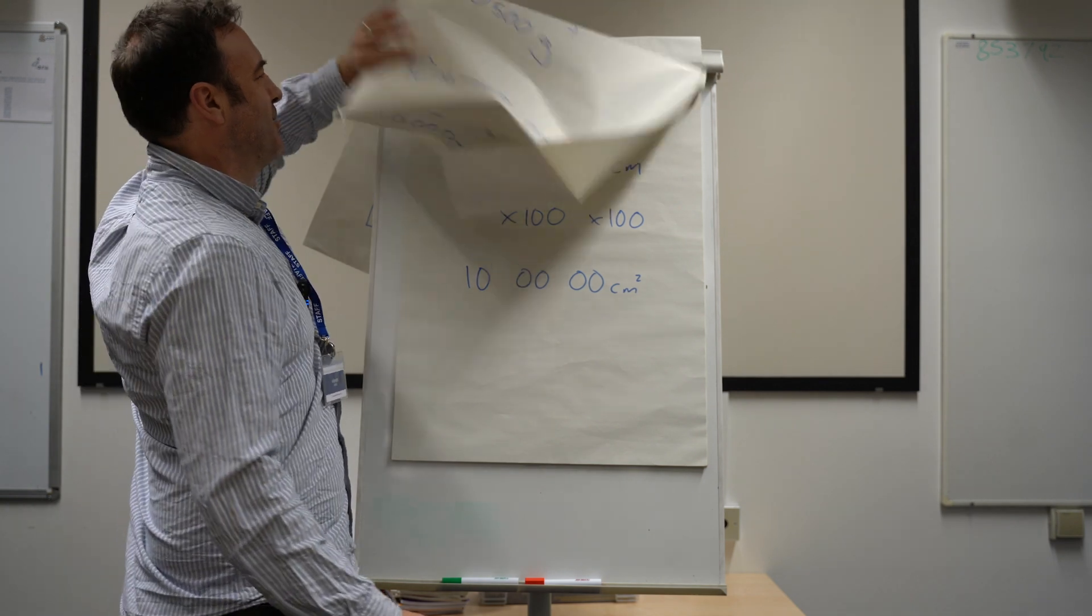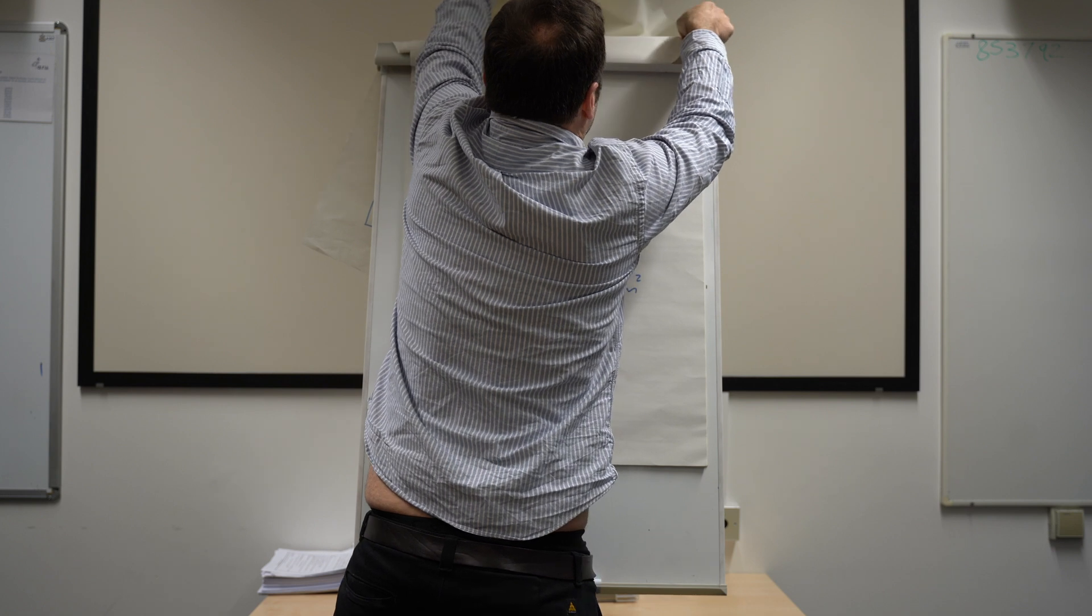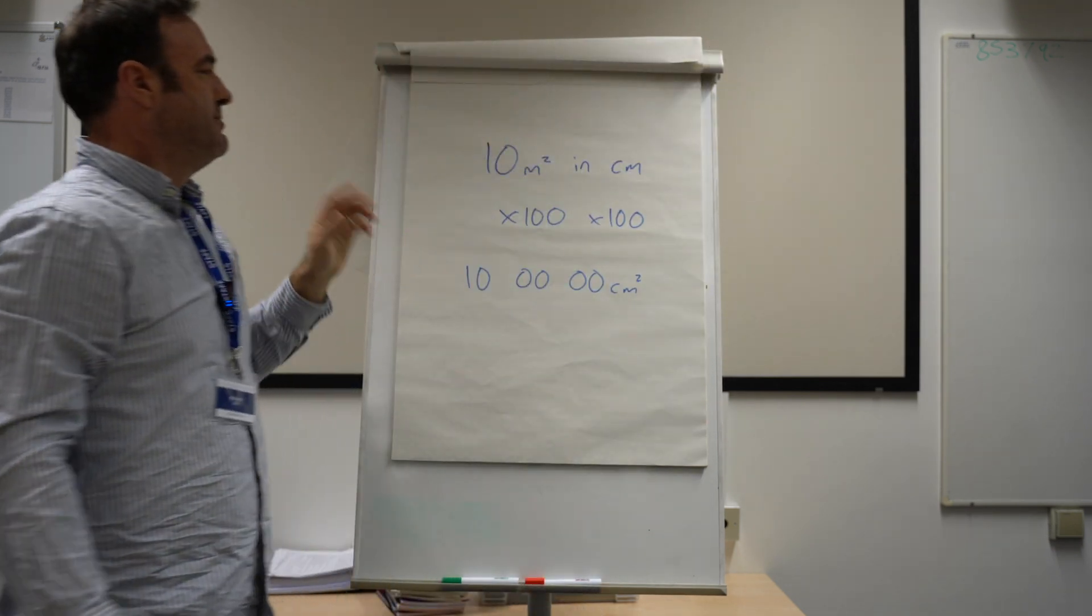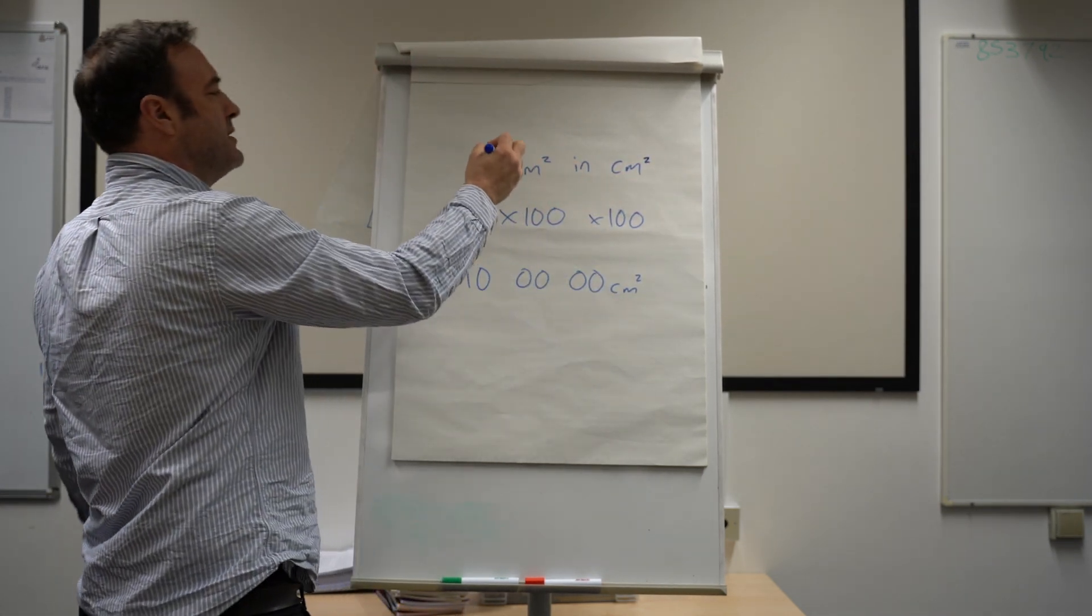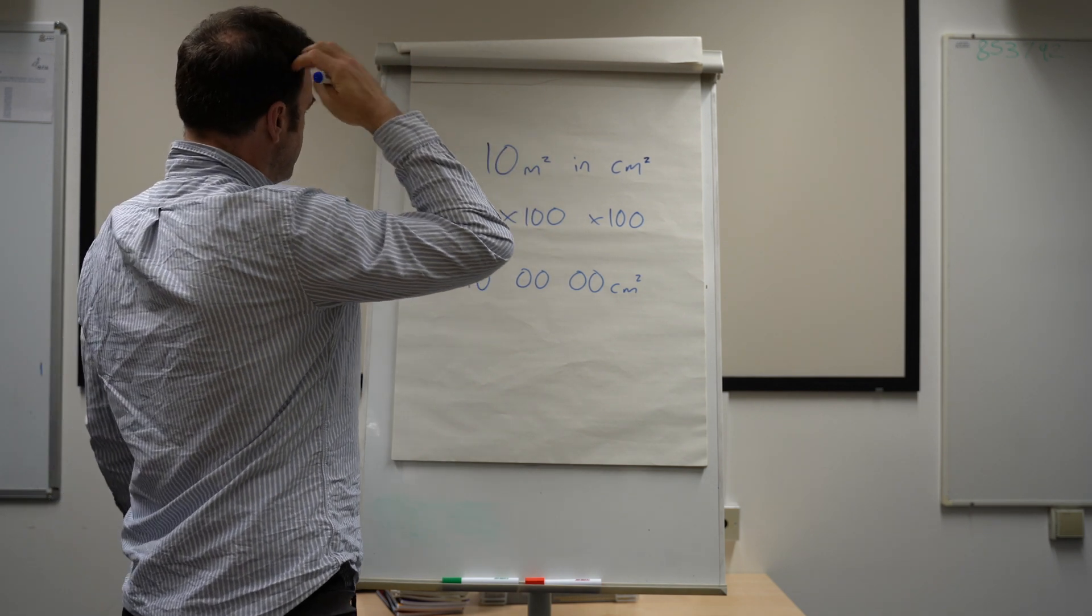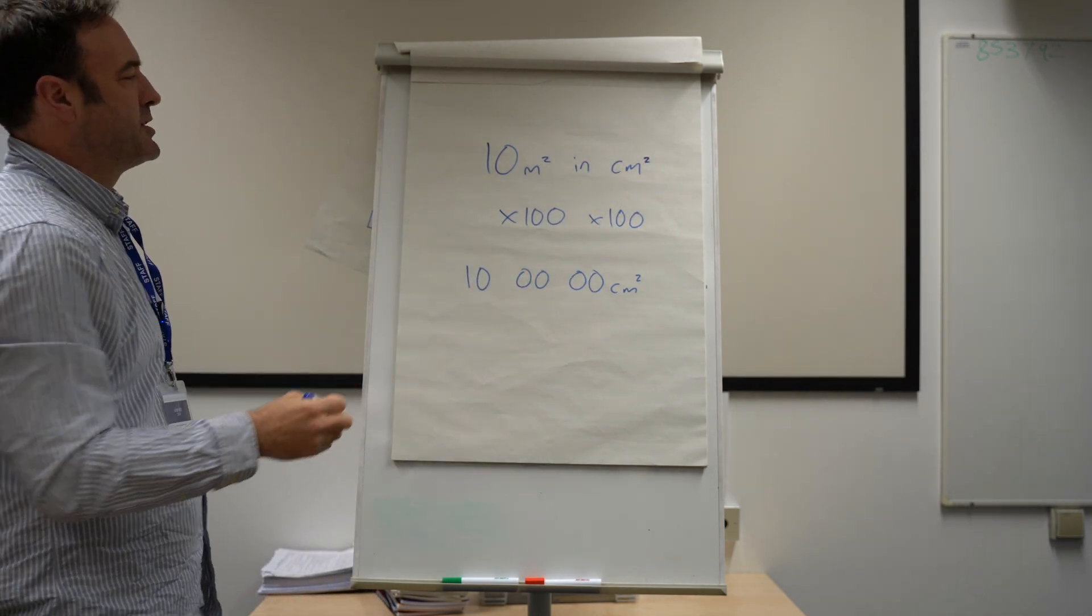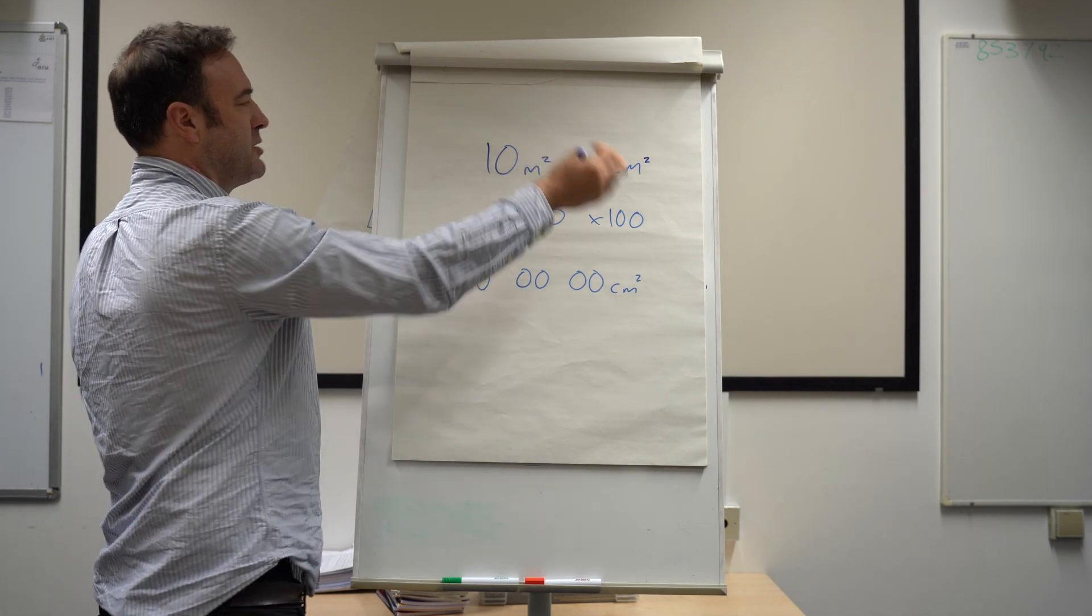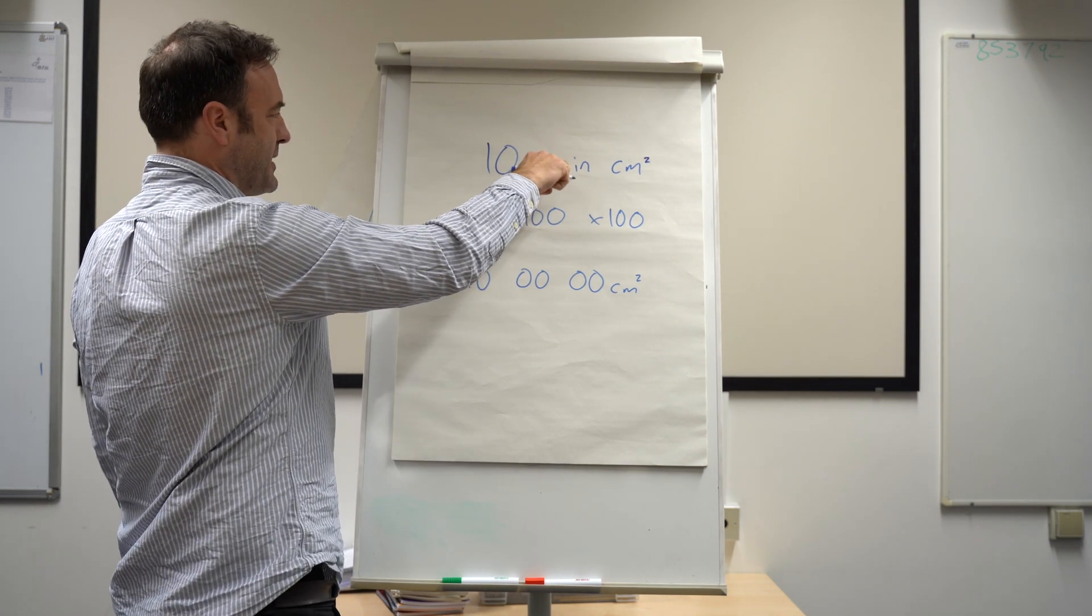Here we come to this one, which I definitely have seen in 11 plus exams—designed to catch kids out. Where we might go from 10 metres squared and convert it to centimetres squared. Now what most people would do is they would end up doing 10 times 10 because they'd see the square and say it's 100.